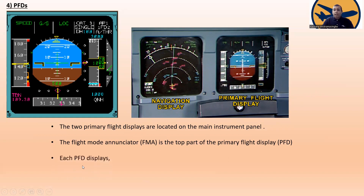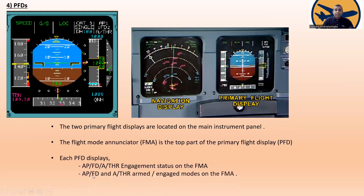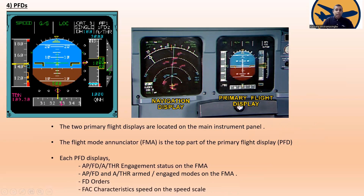Each primary flight display shows autopilot, flight director, and auto thrust engagement status on the flight mode announcer. The autopilot, flight director, and auto thrust arm and engaged modes are also shown on the flight mode announcer, along with flight director orders and aircraft characteristic speeds on the speed scale.